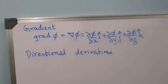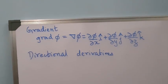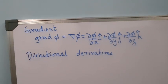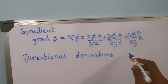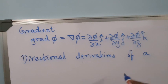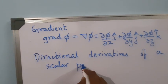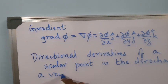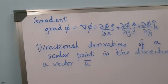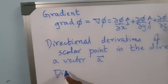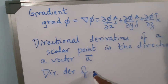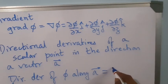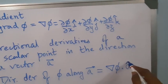Hello students. In the previous video we saw the definition of gradient, the geometrical meaning, and its application to find normals to surfaces. In this video we'll be discussing directional derivatives — the directional derivative of a scalar point function in the direction of a vector, say a. This is given by grad φ dot a-hat, i.e., it is the projection of grad φ on a.